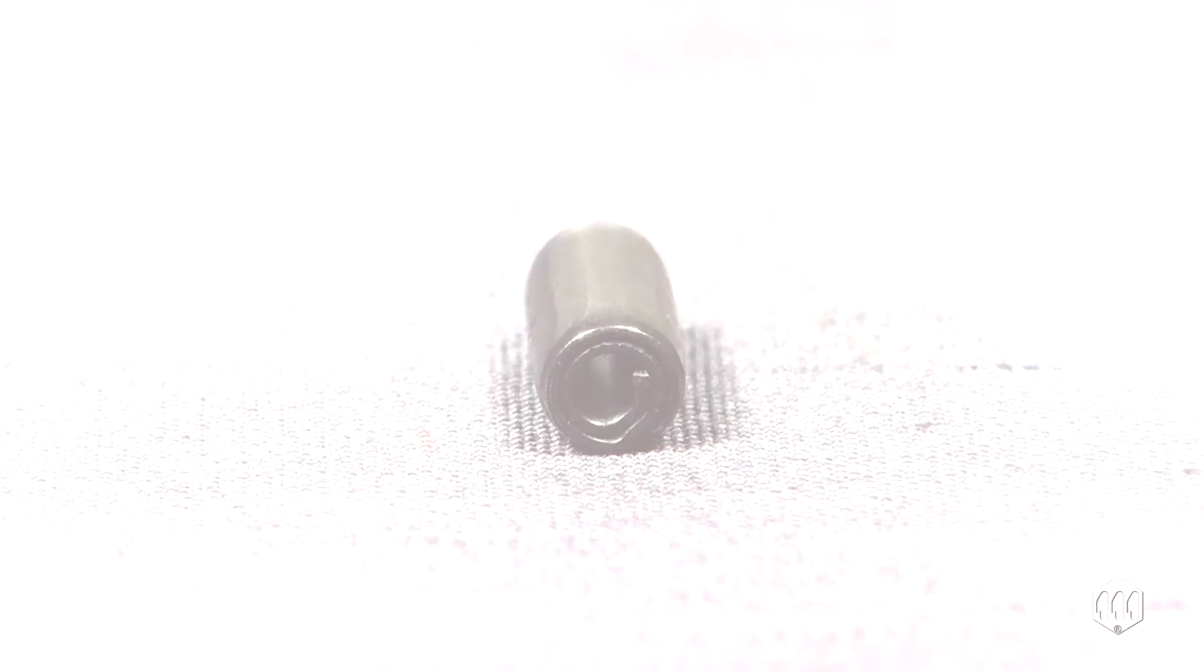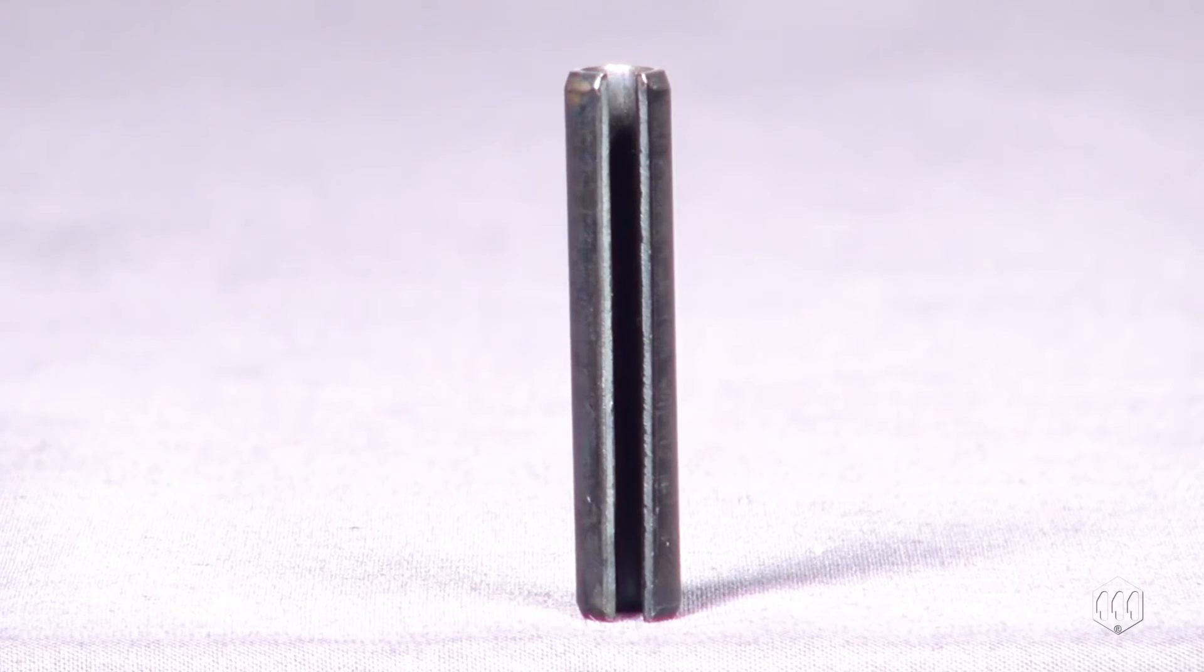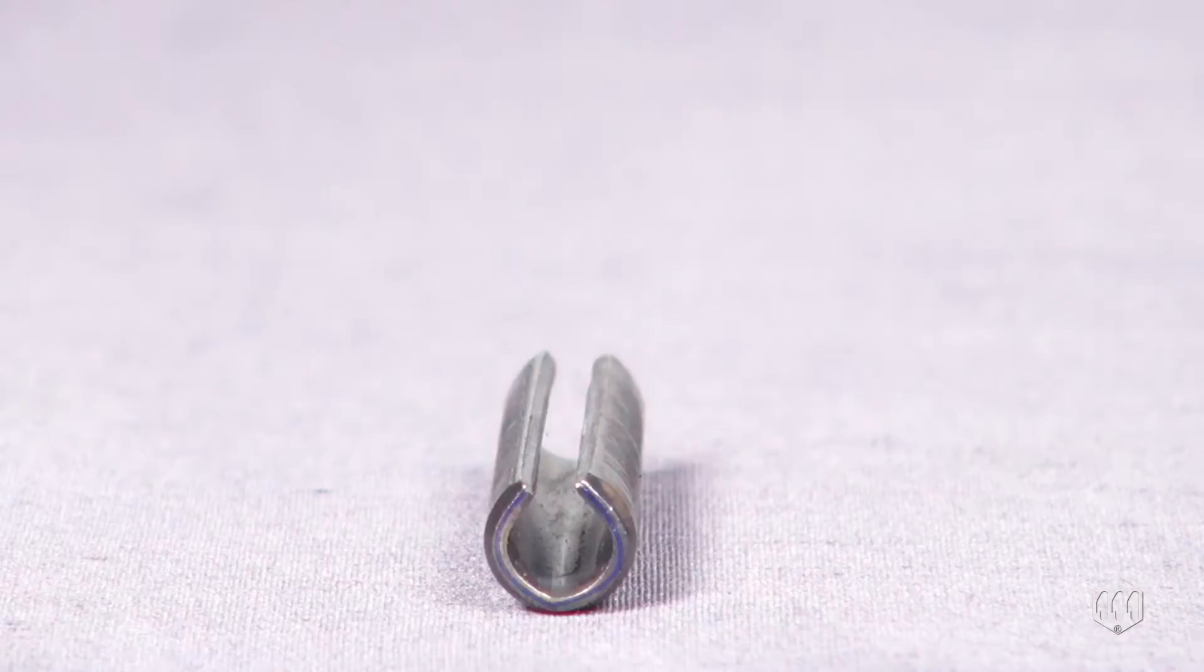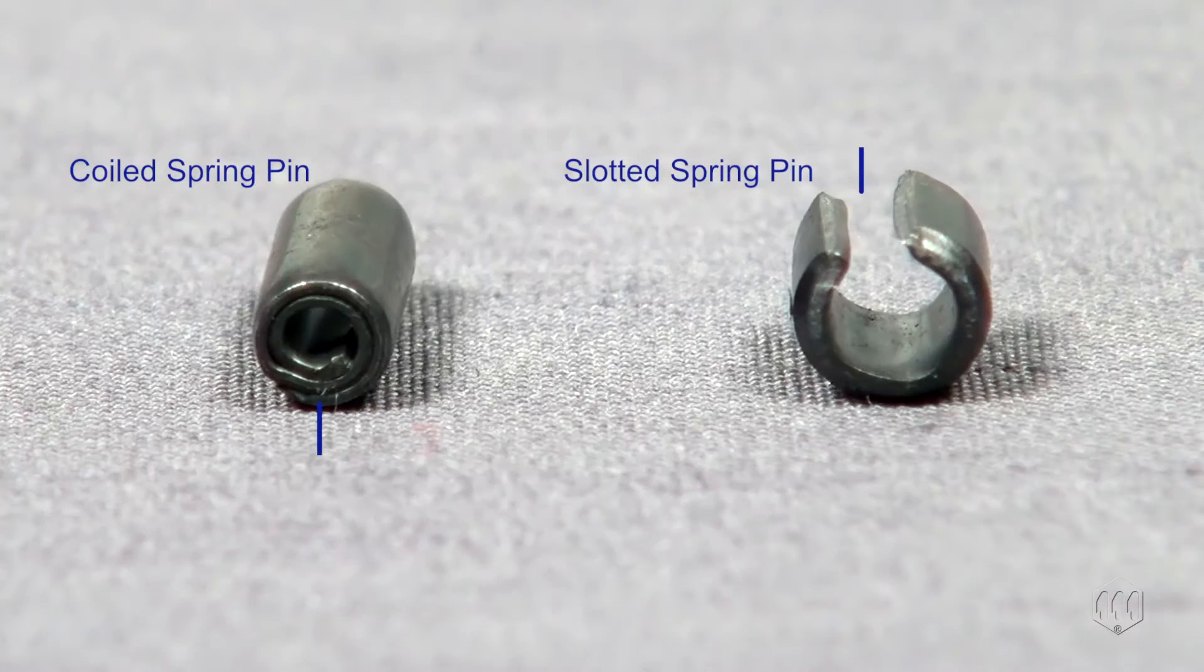Slotted spring pins also exert radial pressure. A narrow slot runs the length of the pin. Viewed from one end, it looks like a C. This tiny gap gives the pin enough flexibility and are best for automation assembly and high performance applications.